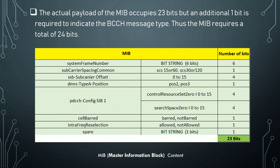In the bit mapping table we can see: system frame number is 6 bits, subcarrier spacing common is 1 bit, SSB subcarrier offset is 4 bits, DMRS type A position is 1 bit, PDCCH config SIB1 includes control resource set 0 (0–15) and search space 0 (0–15) for 4 bits each, cell barred is 1 bit, intra-frequency reselection is 1 bit, and spare is 1 bit — totaling 23 bits.